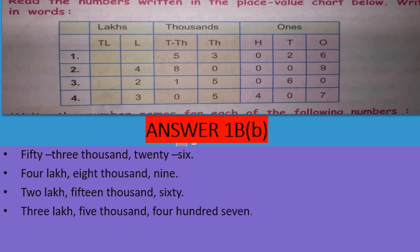Read the numbers written in the place value chart below and write them in words. Answer 1: Fifty-three thousand twenty-six. Answer 2: Four lakh eighty thousand nine. Answer 3: Two lakh fifteen thousand sixty. Answer 4: Three lakh five thousand four hundred seven.